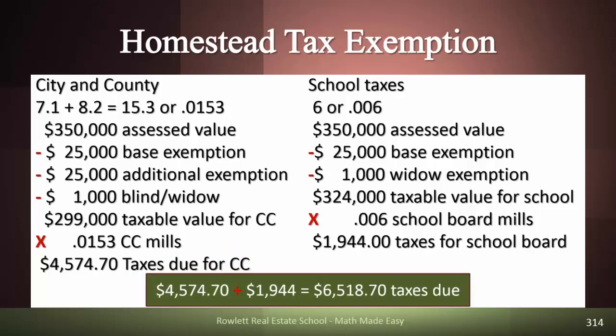Adding city and county and school board together for the total taxes due: $4,574.70 plus $1,944 gives us a total property tax bill of $6,518.70.